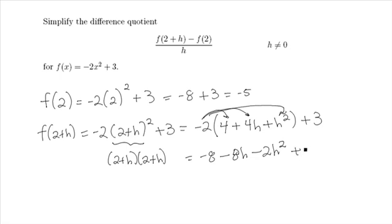And hey, we have another negative 8 plus 3 here. That can be reduced to negative 5 minus 8h minus 2h squared.